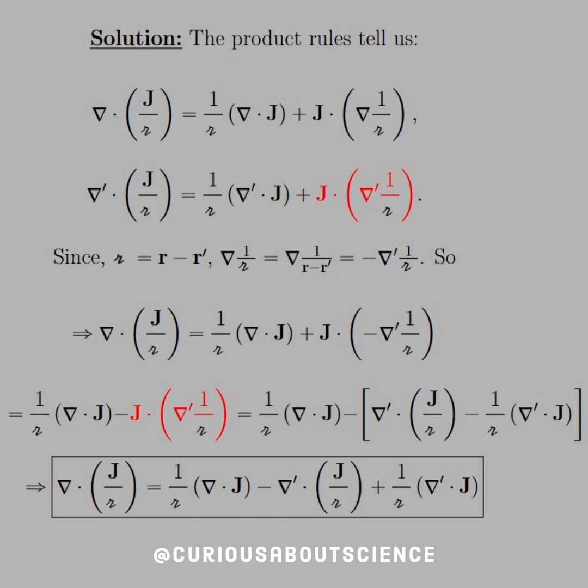Now, let's note that script R is equal to R minus R prime. Field point, source point, and the difference is from the source point to the field point. Because R was the origin point, and then R prime was the source point, so the difference to the field point is script R.